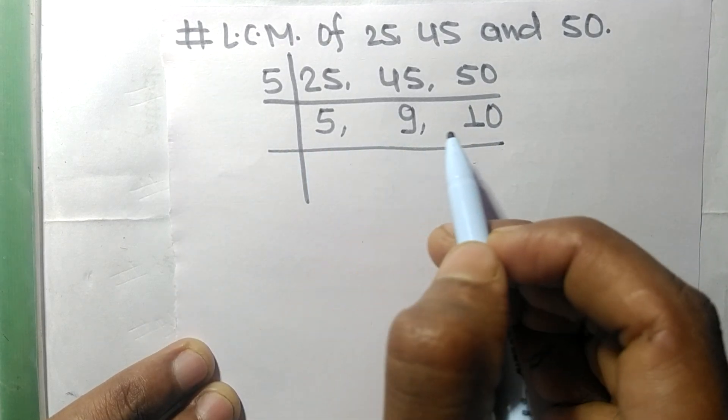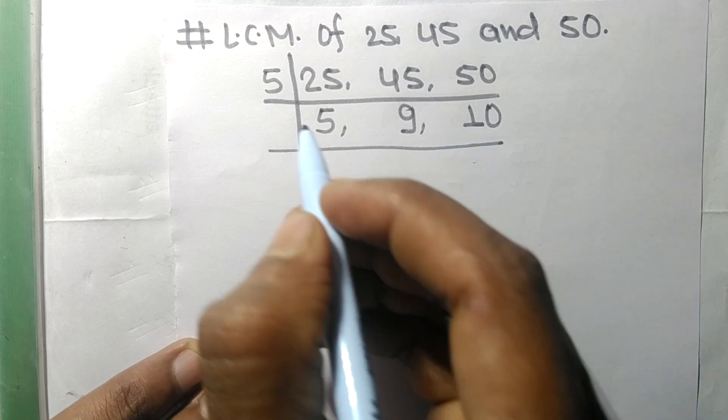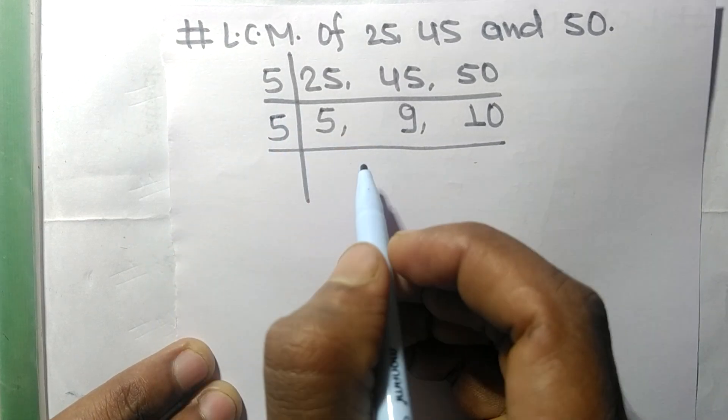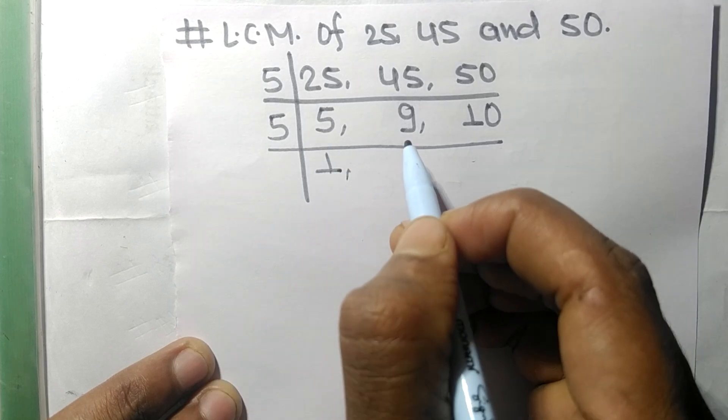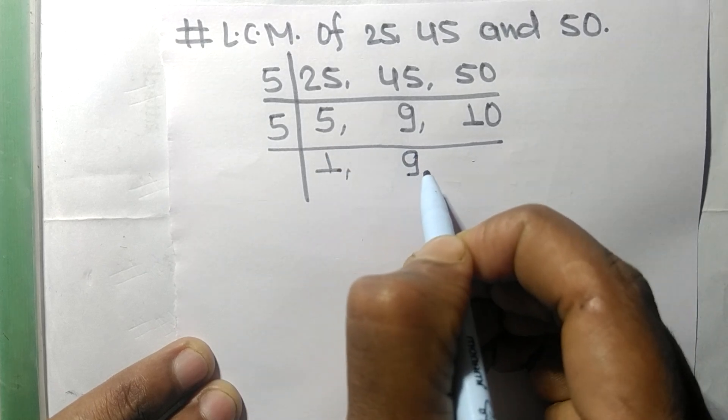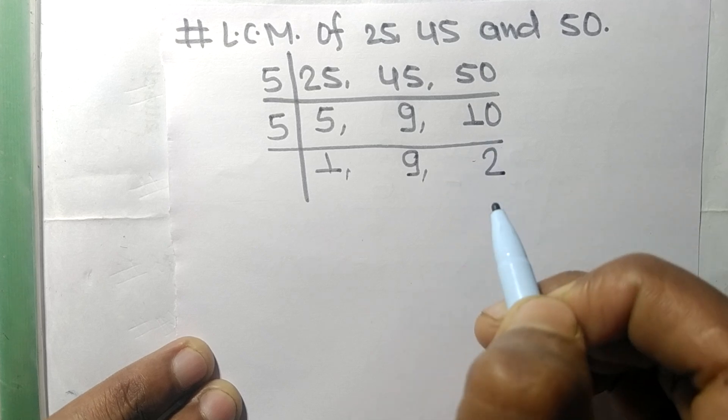5 and 10 are exactly divisible by 5. So 5 times 1 means 5, 9 not divisible so it stays the same, 5 times 2 means 10.